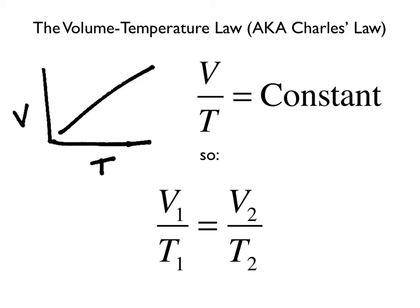Since our volume versus temperature graph has a constant slope, we can state that the volume divided by temperature is a constant. This allows us to set up the useful proportion shown below. This proportion is useful in predicting how the volume of a gas sample will change when the temperature is changed.